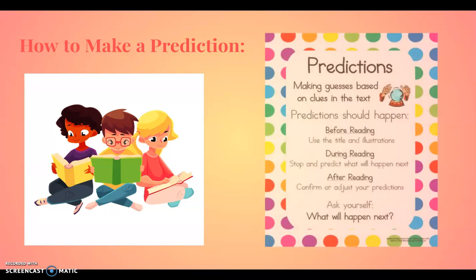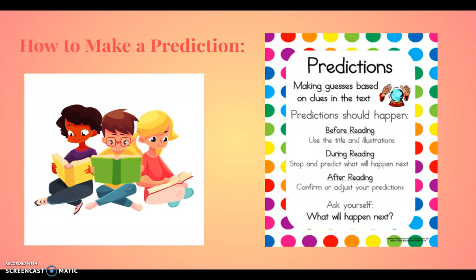How to make a prediction: when we make a prediction, we make guesses based on clues in the text. Predictions should happen before reading using the title and illustrations, during reading when we stop and predict what will happen next, and after reading when we confirm or adjust the predictions we made before. We will ask ourselves what will happen next.